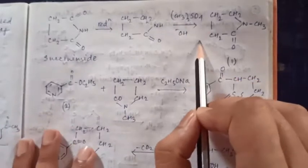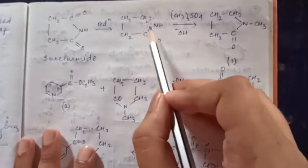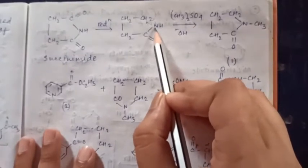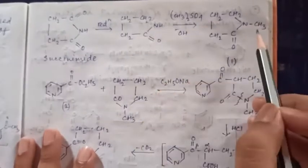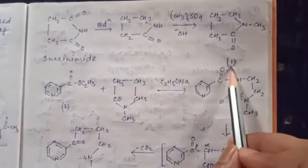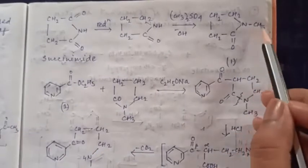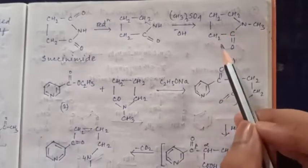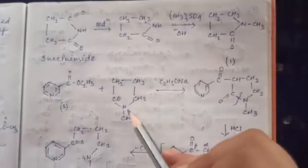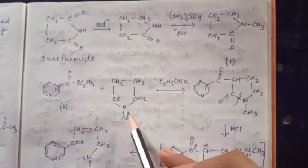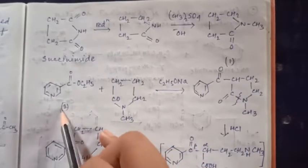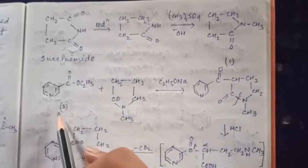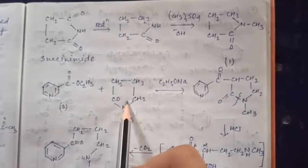It is treated with dimethyl sulfate for N-methylation. This compound formed is known as N-methylpyrrolidinone. This is N-methylpyrrolidinone.